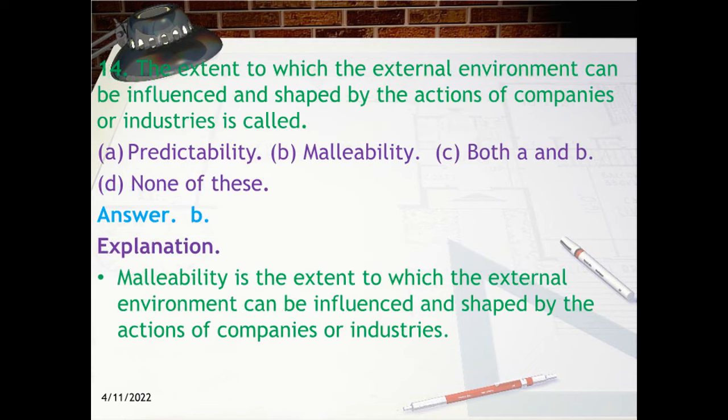Question 14: The extent to which the external environment can be influenced and shaped by the actions of companies or industries is called — A. Predictability, B. Malleability, C. Both A and B, D. None of these. Answer: B. Malleability.